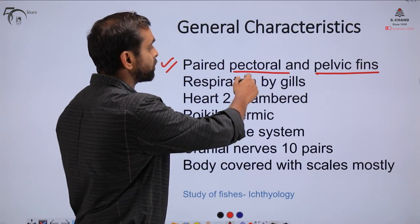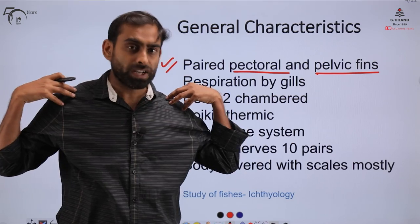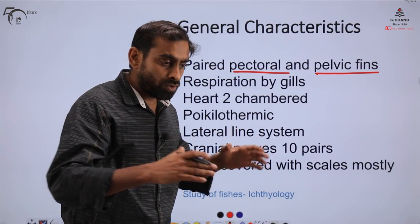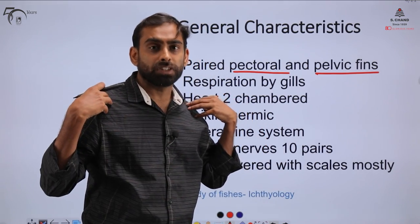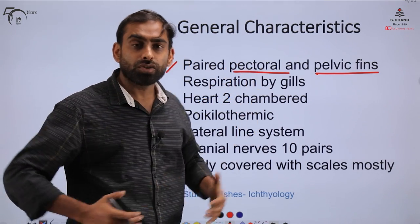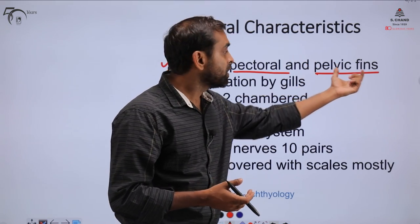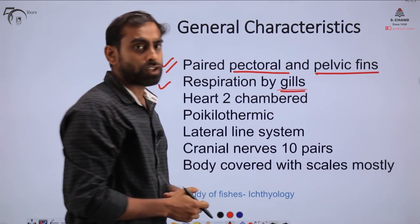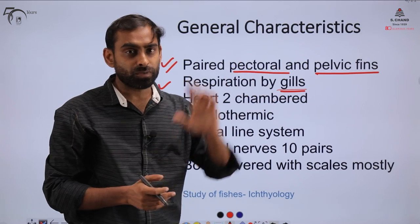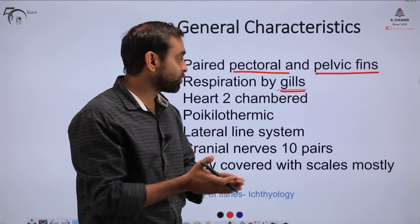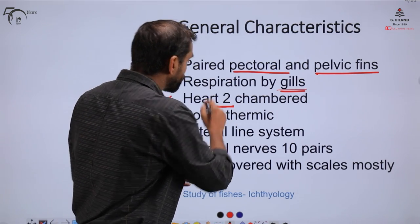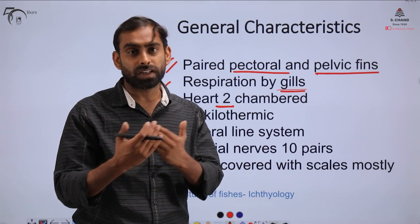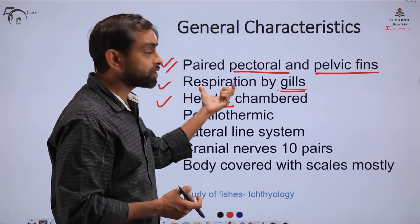To help them swim, fish have pectoral and pelvic fins. Pectoral fins are close to the shoulder area, and pelvic fins are close to the pelvic or hip area. Mainly, respiration in fish occurs through gills. An exception is lungfishes, where lungs emerge and they can also respire through lungs. Fish also have a more developed heart compared to organisms in previous phylums.